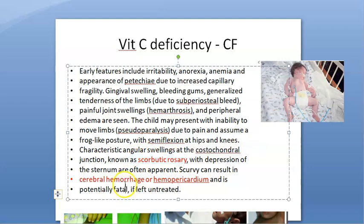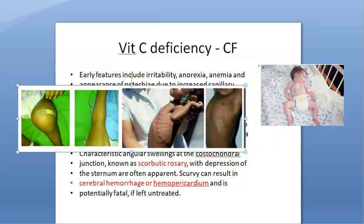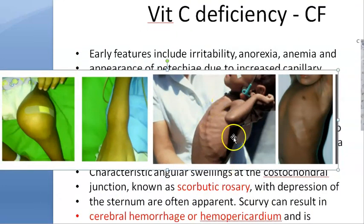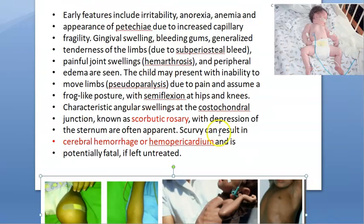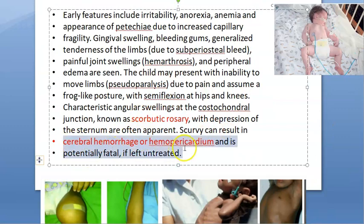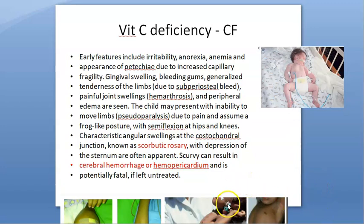There is something called scorbutic rosary — swelling at the costochondral junction with depression of the sternum often present. This is analogous to rachitic rosary in vitamin D deficiency. These people bleed, so they can have cerebral hemorrhage and hemopericardium — blood around the heart — which can become fatal, affecting vital organs.